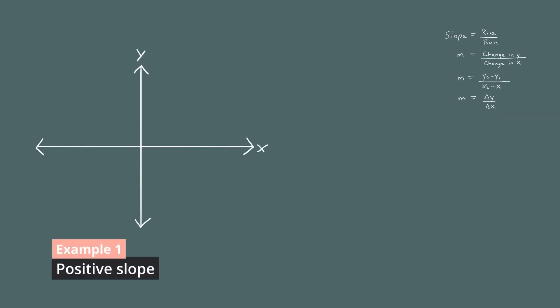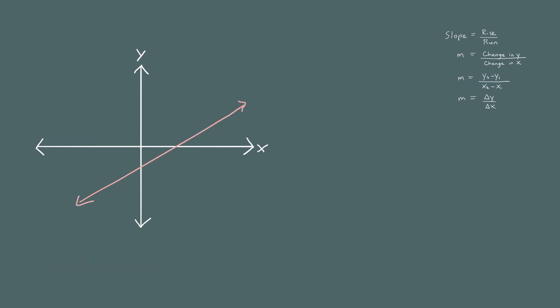For our first example, we're going to look at a line with a positive slope. Let's say this line goes through the point (2, 1) and also through the point (4, 3). We have two points, and two points is all you need to compute the slope. We just have to designate one of these points as point 1 and another as point 2, and once you do that and stick to it, you'll be perfectly fine.